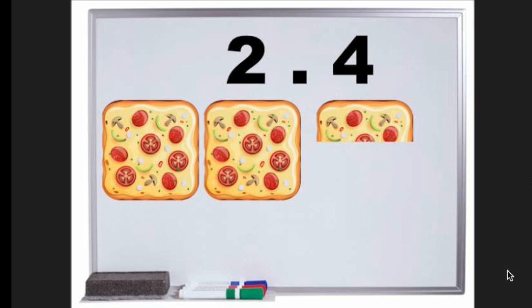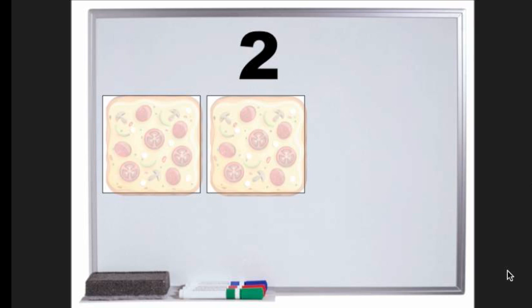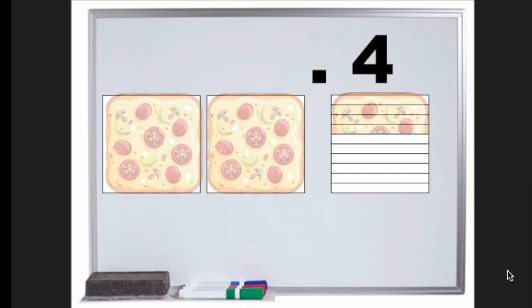This is what 2.4 pizzas look like. See, we have two whole pizzas and only part of the next pizza. Let's check that. 1, 2, 0.4. See, we have four slices of a pizza that was cut into 10 pieces. Someone must have eaten the other six slices.